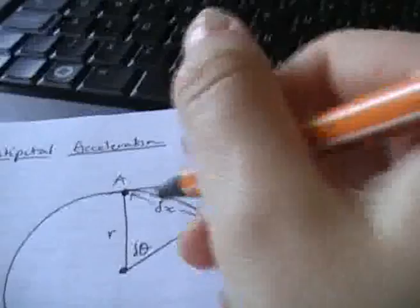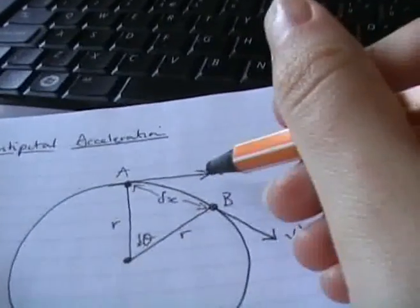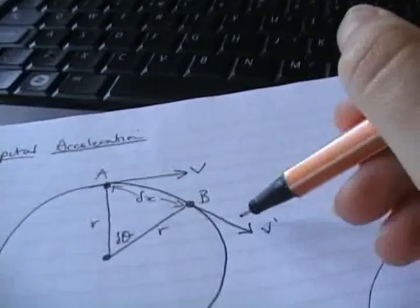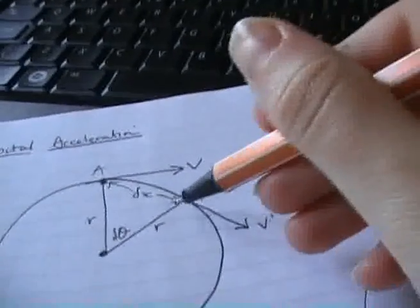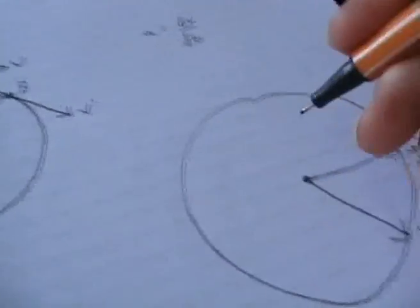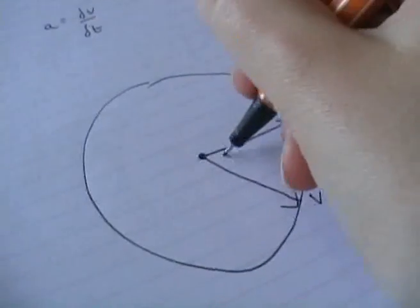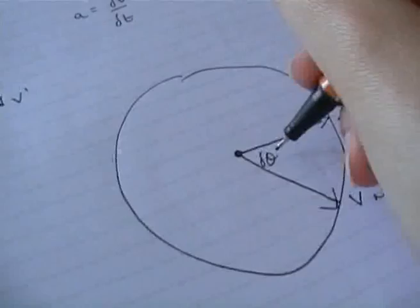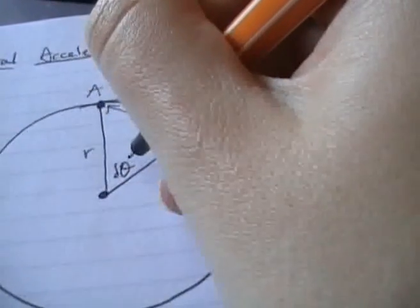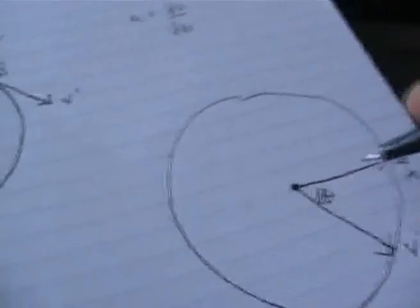Now, because this velocity vector is at 90 degrees to the radius, and again, this one is 90 degrees to the radius, then if you have a look, this angle here is going to be delta theta. It's the same delta theta as this delta theta, which does make sense.